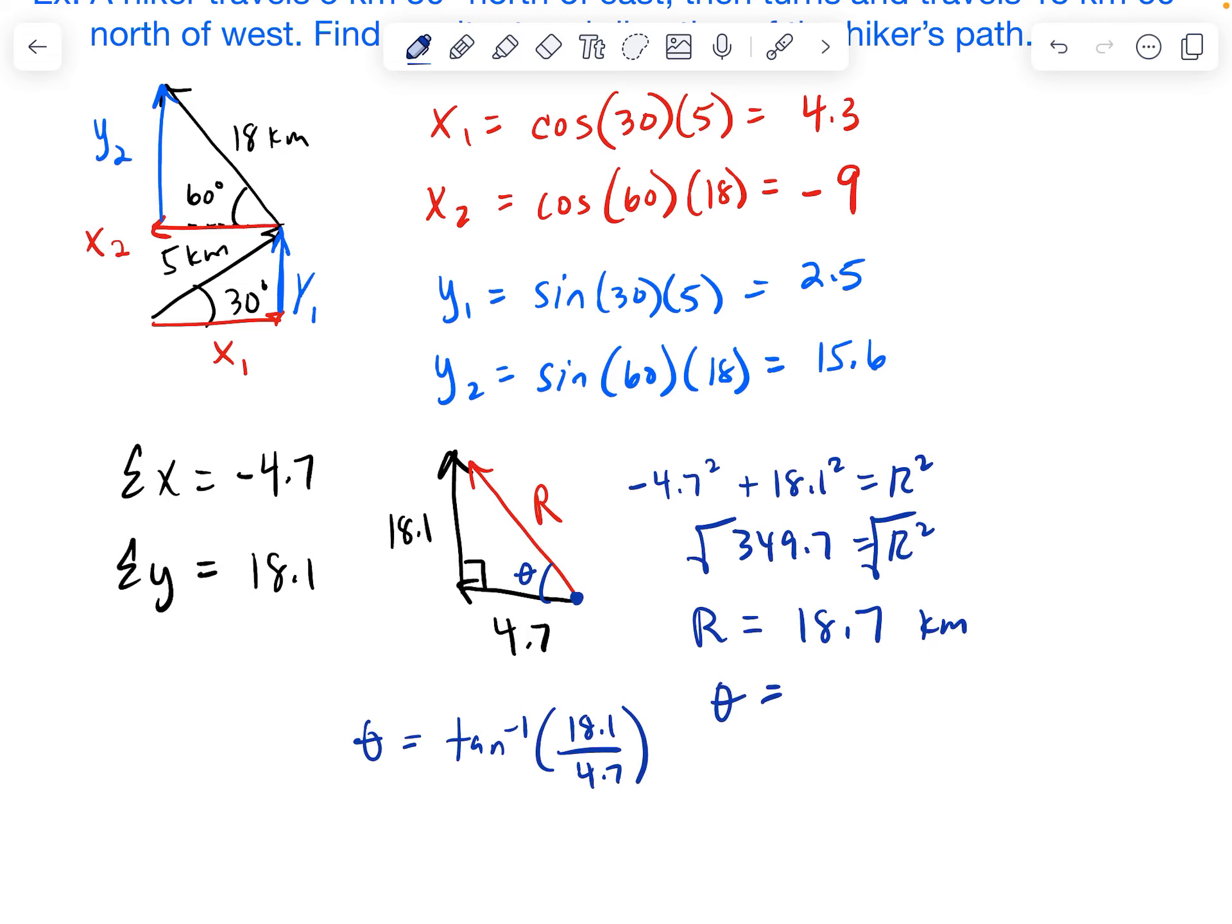So hit your second key or your shift key, then tangent, 18.1, divided by 4.7. That gives us 75.4 degrees.